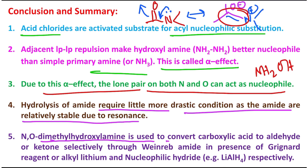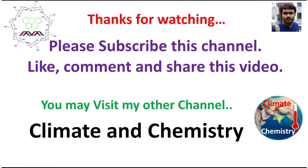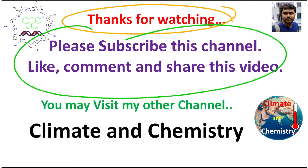N,O-dimethylhydroxylamine — the Weinreb amide — is used to convert carboxylic acids directly and selectively to aldehydes or ketones. To get a ketone you use a Grignard reagent or alkyl lithium; to prepare an aldehyde you need a hydride source such as lithium aluminium hydride. This is a very selective and useful reaction, and I shall make a dedicated lecture on it. I thank everyone for watching. If you find the content of my channel worthy, please help the channel grow. Stay happy, stay blessed — see you in my next video.